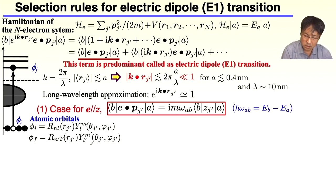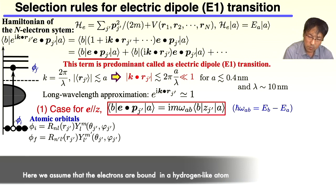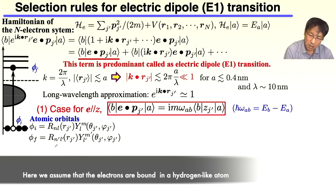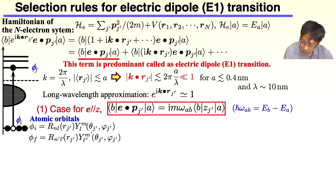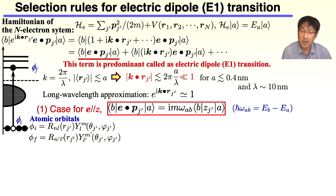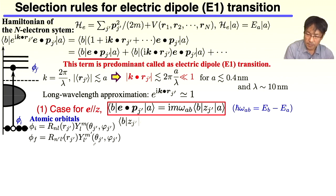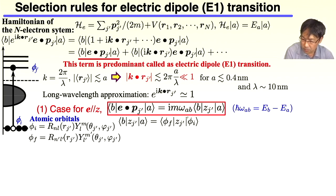Now we consider the electrons are bound to the nucleus. Especially for the initial state, the electrons are strongly bound, expressed by using the radial function times spherical harmonics like this. Also, for the final state — the unoccupied state — we can express it as a linear combination of atomic orbitals. For simplicity, we consider the single atom. Then the final state is also expressed by the unoccupied atomic orbital like this one. Then the calculation of this term becomes a one-electron problem.